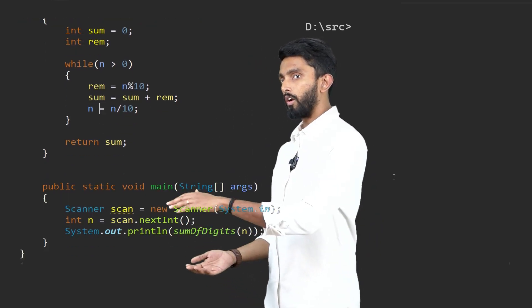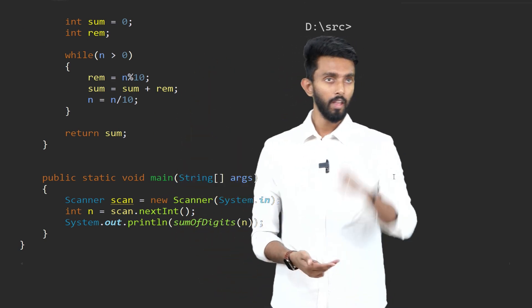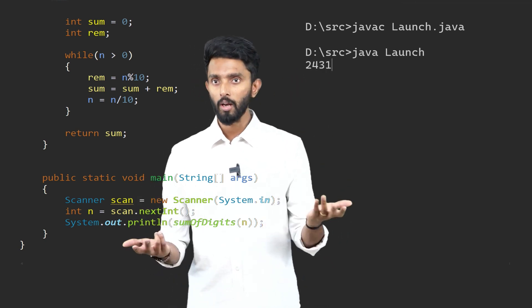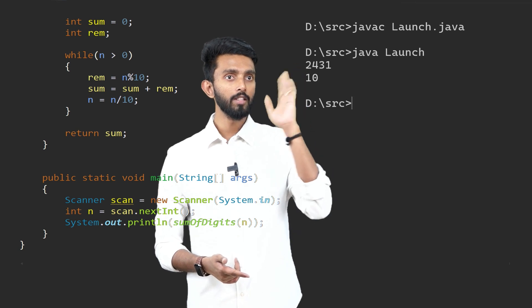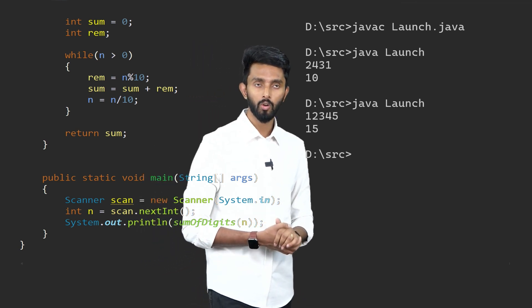All this surrounding code will already be written in the platform for most drives — nobody will expect you to write it from scratch. If I compile this code and execute it, the cursor is blinking, waiting for input. I give 2431 — press enter — correctly, the answer is 10. Once again I execute: I give 12345 — press enter — correctly, the answer is 15. So it works. I want all of you to try this question and see if all test cases you are able to pass.